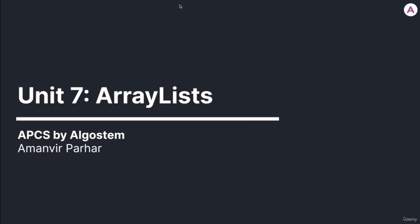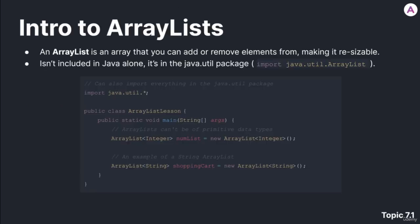Let's go on to Unit 7 of Valgo Stem's AP Computer Science course, which is on ArrayLists. An ArrayList is an array that you can add or remove elements from, making it resizable.